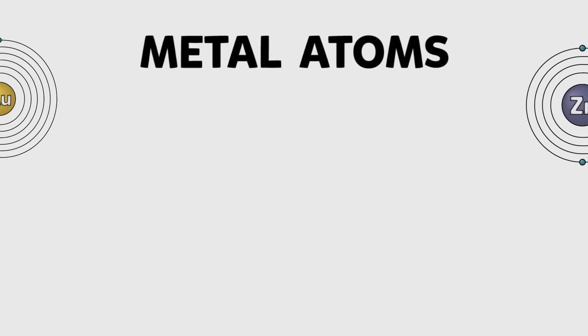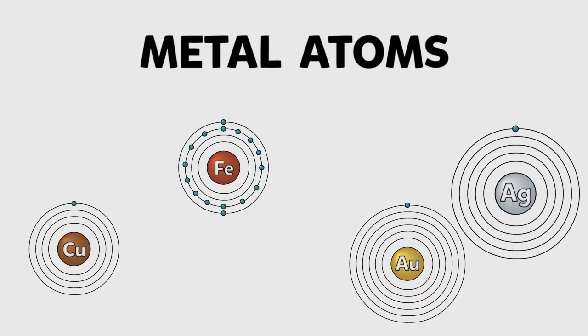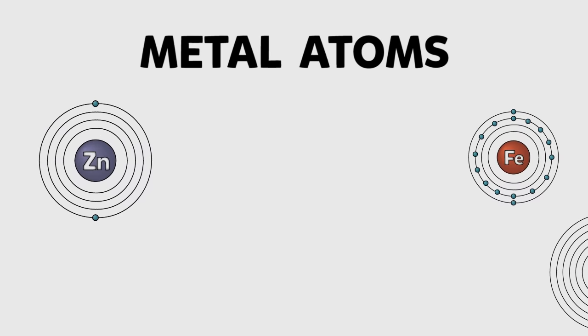Metal atoms are typified by having only a few electrons in their outer shells. This means that even when they bond there's always room in this valence shell for more electrons.